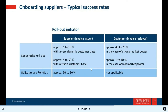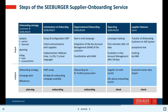Typical success rates for onboarding: cooperative rollout for supplier invoices is approximately 10% with a very dynamic customer base, and 5-10% in a stable customer base. Customer invoice receiver corporate rollout approach achieves 40-75% with strong market power, and 1-10% with low market power. Obligation rollout for suppliers achieves 50-90%, while for invoice receivers it is not applicable.